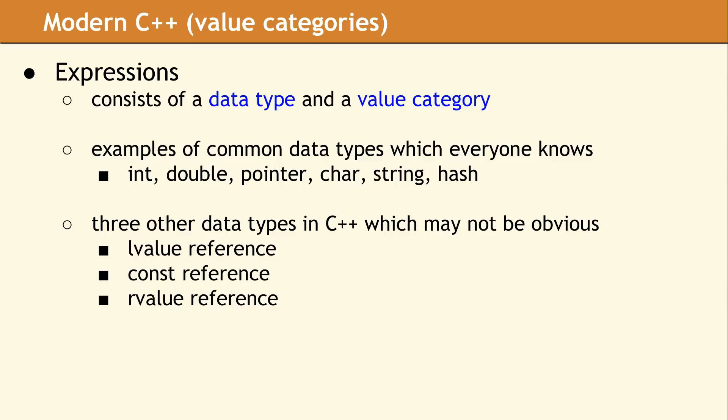In one of our early presentations on modern C++ data types and value categories, there were several questions about the distinction between some data types and why value categories matter. A few people thought this was an area that was made overly complicated in C++ 11, with too many definitions. Of course, data types like int or double are based in math and are common to many computer languages, so these are typically easy to understand.